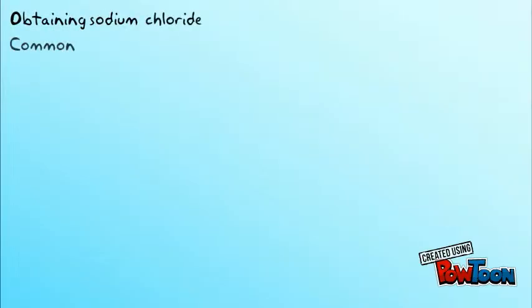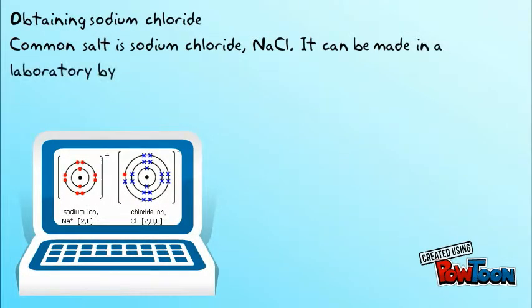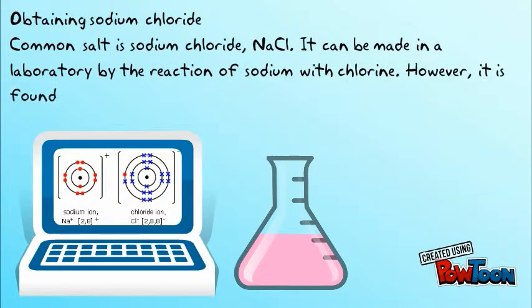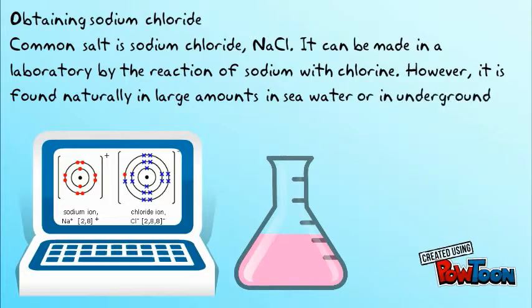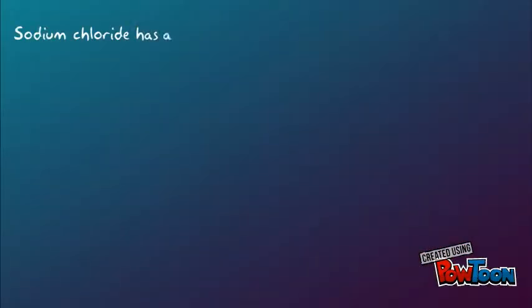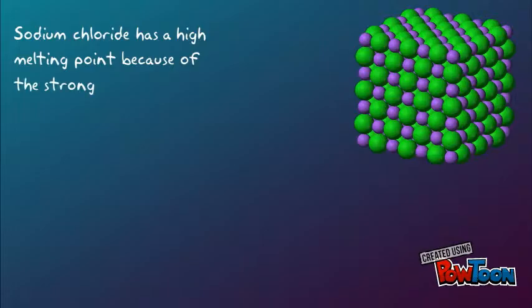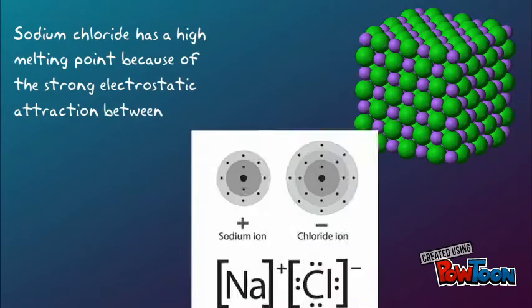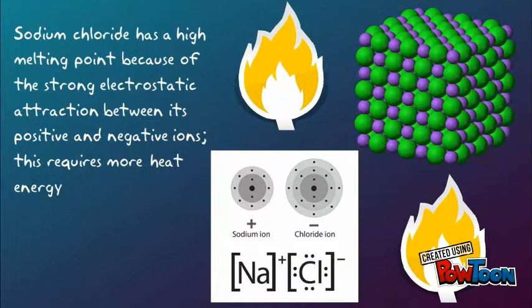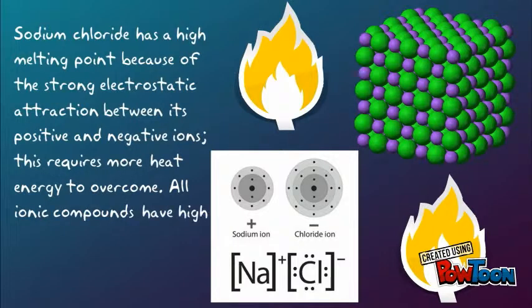Obtaining sodium chloride: common salt is sodium chloride. It can be made in a laboratory by the reaction of sodium with chlorine; however, it is found naturally in large amounts in seawater or underground deposits. Sodium chloride has a high melting point because of the strong electrostatic attraction between its positive and negative ions. This requires more heat energy to overcome. All ionic compounds have high melting points for this reason.